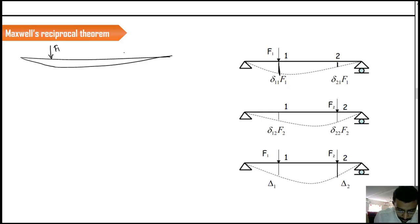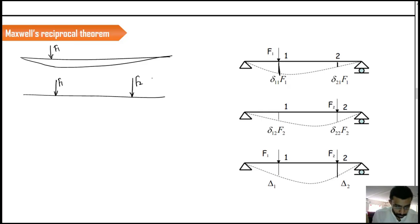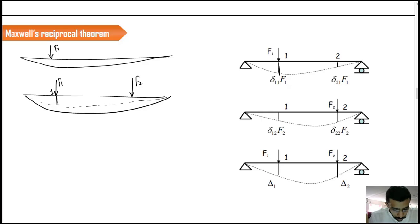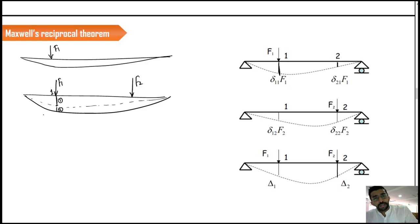This was F1. After the application of F2, you have F1 here already, and upon the application of F2, this was the initial deflection curve. Now it has changed. So it has got two parts. If you take the location at 1, one was the deflection caused by load F1, and the second one was caused by load F2.